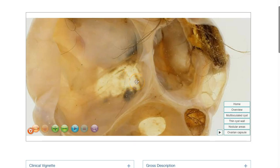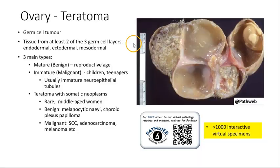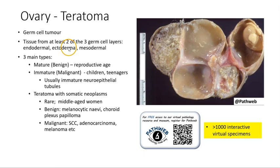Teratomas are germ cell tumors, and they contain tissue from at least two of the three germ cell layers, meaning endodermal, ectodermal, and mesodermal.